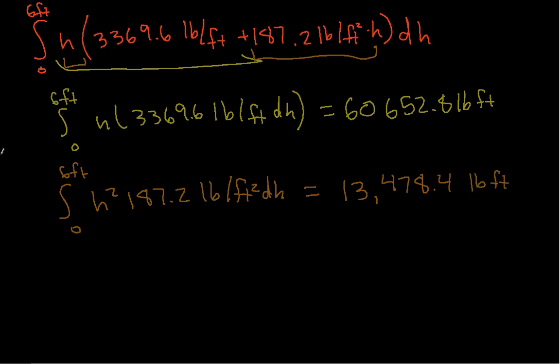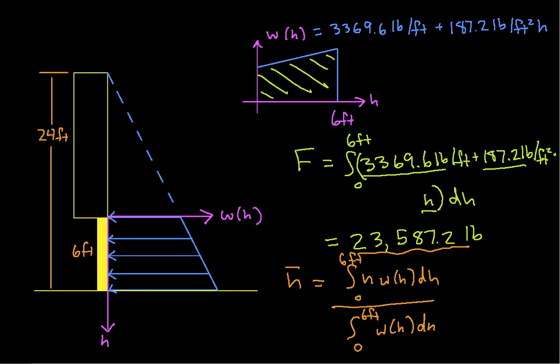And so the total integral is going to be the sum of these two guys, which I get 74,131.2 pounds times feet. And so I go back to my original expression for H-bar. I plug in the one I just found here, and I plug in F for here.